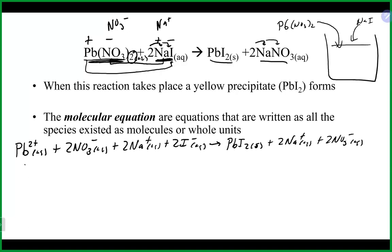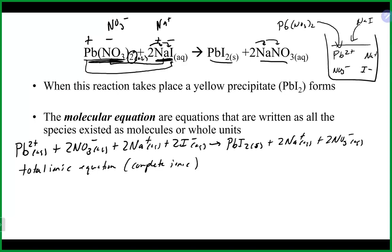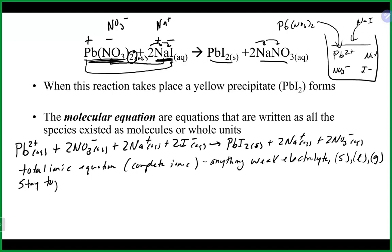This equation is called the total ionic equation, also known as the complete ionic equation. It basically shows all the ions floating around when you dump everything into a beaker. The rules for writing it: anything that is a weak electrolyte, a solid, a pure liquid, or a gas stays together and is not broken apart. Anything that is a strong electrolyte breaks apart into ions. Also, anything that is an ion in the total ionic equation must have its charge written — that's a very common error.